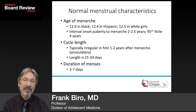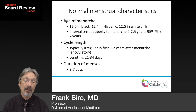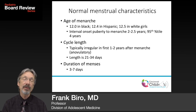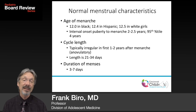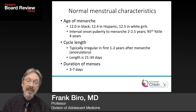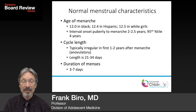Once cycles become ovulatory, the length is somewhere between 21 and 34 days. The fixed part of the cycle is the luteal phase, which is always 14 days — from ovulation to menses. The follicular phase is the variable one and can be anywhere from 7 to 20 days. Duration of menses is somewhere between 3 and 7 days.